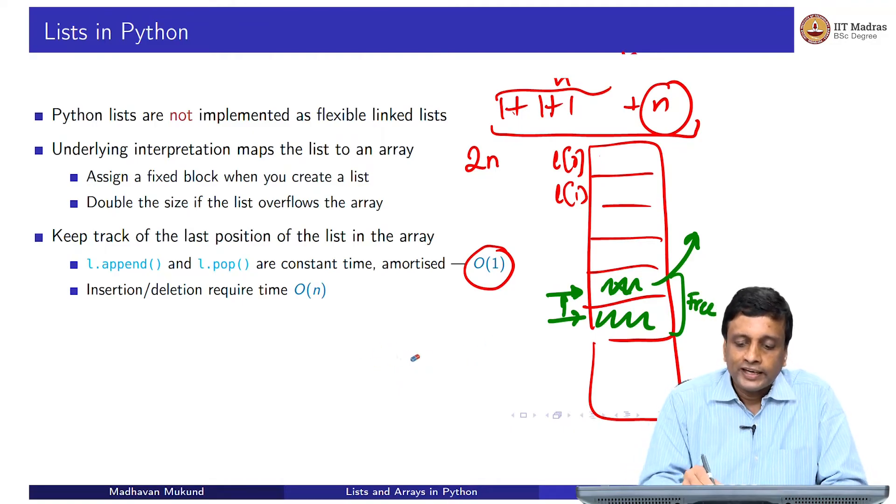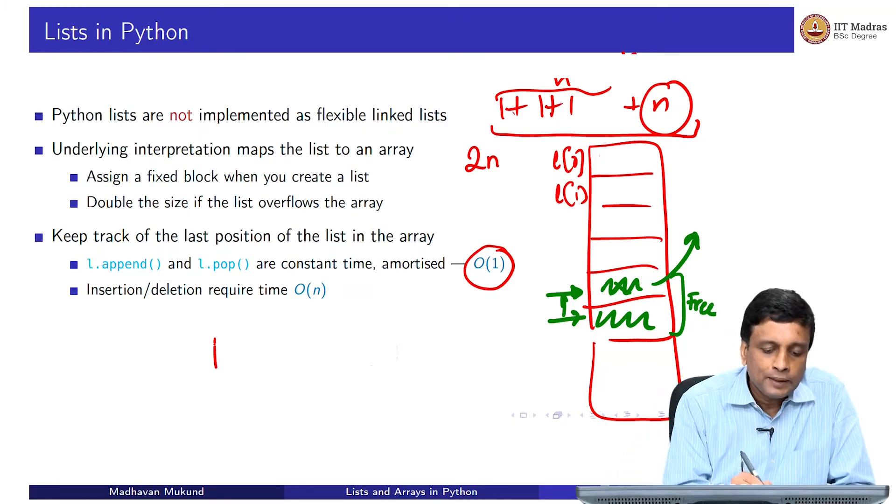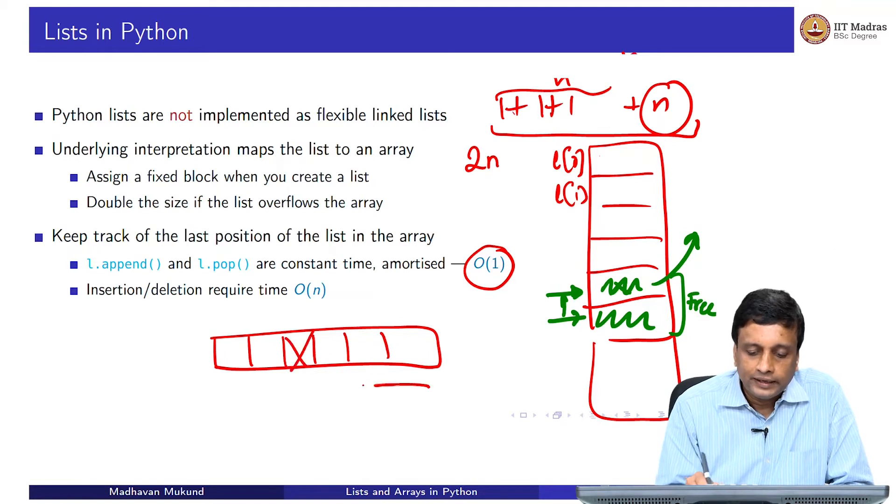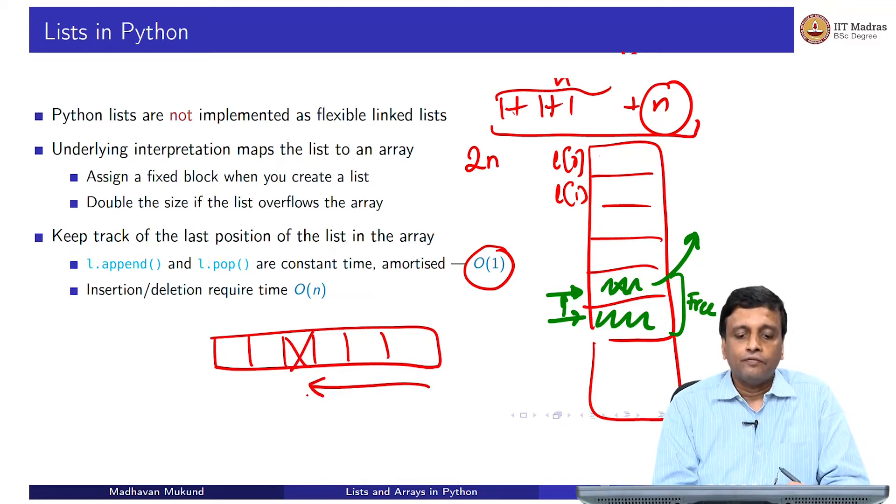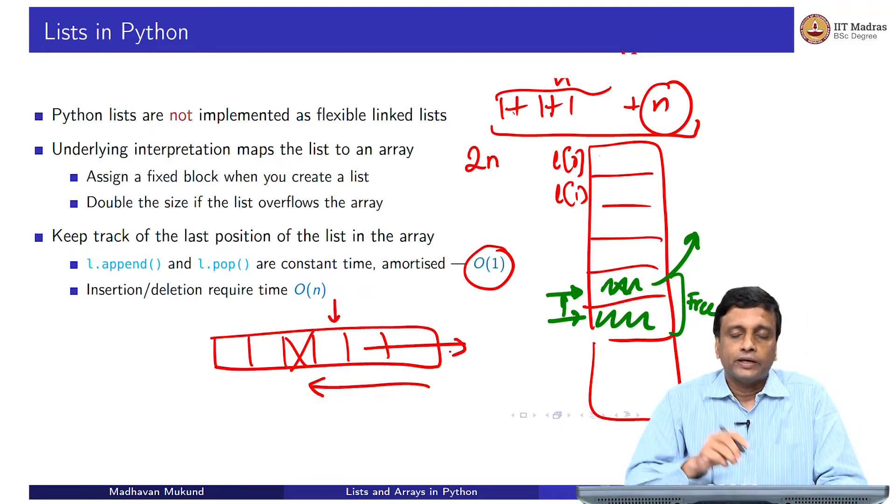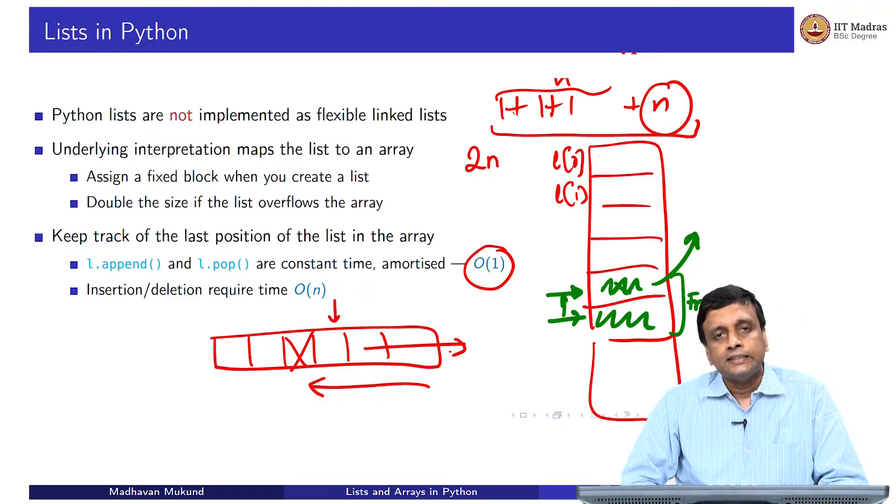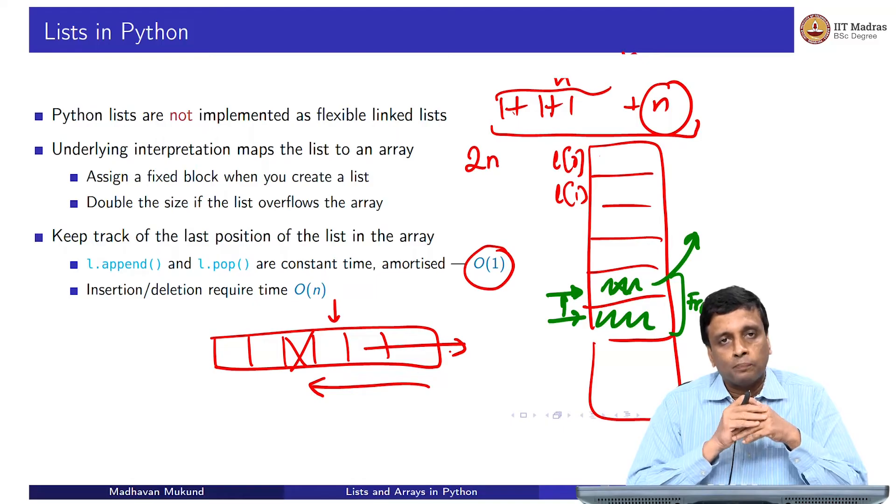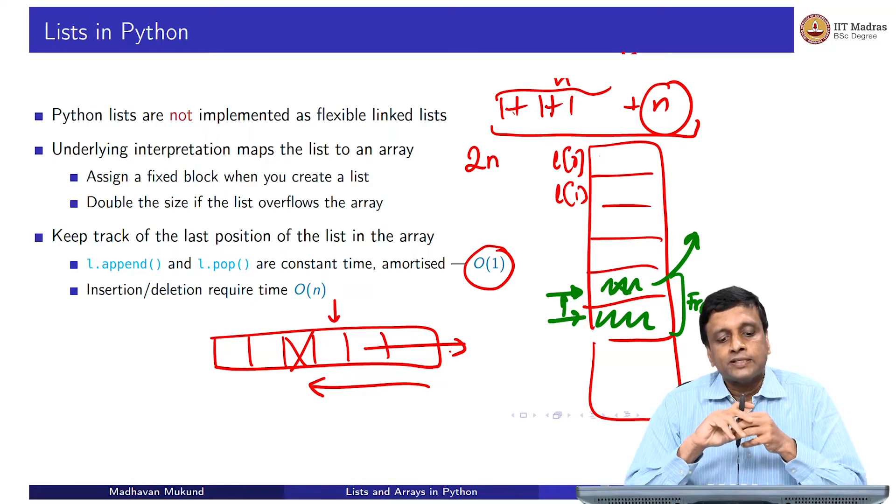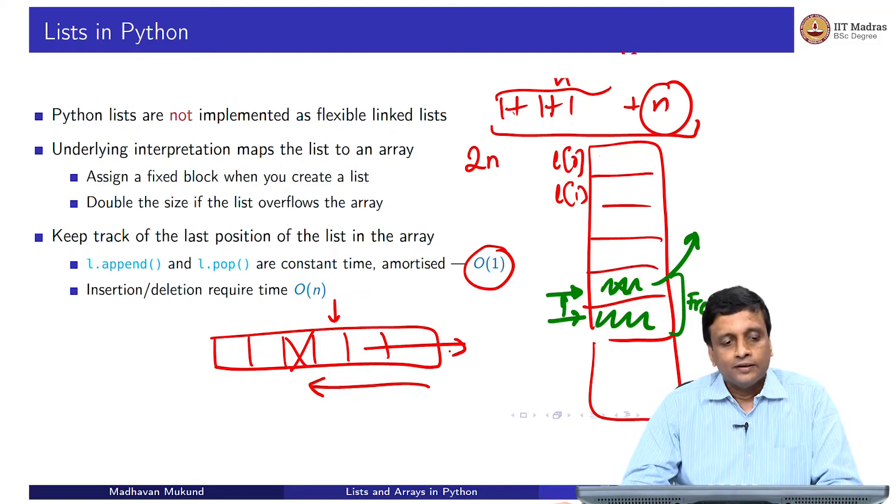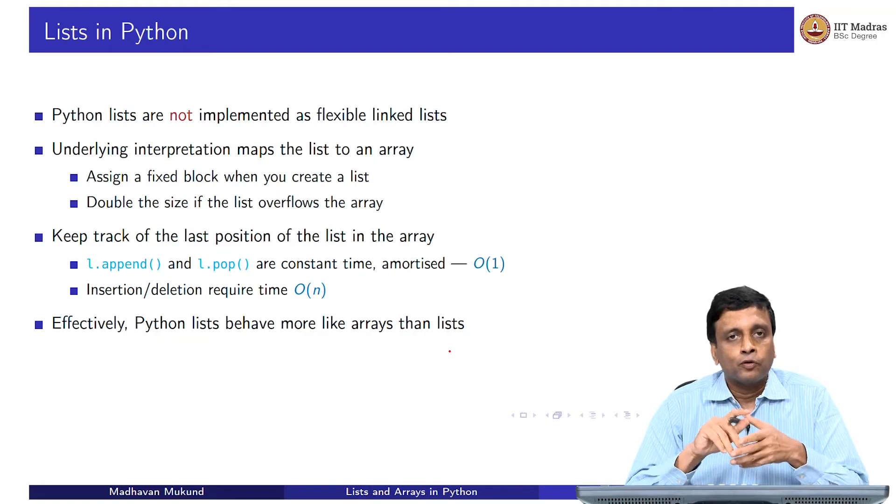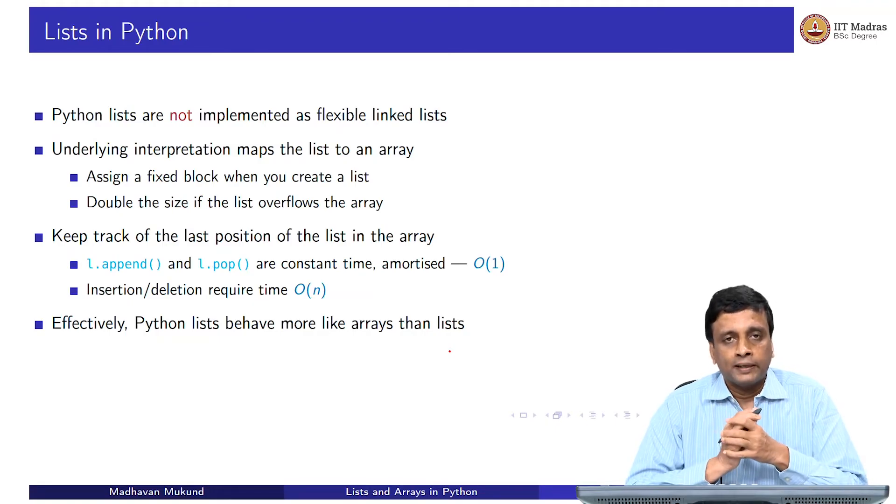On the other hand, as you would expect, because this is an array and exactly the same problem as happens in an array. When I have a sequence and I want to delete this element, I have to shrink everything from the right to the left. Or if I want to insert an element here, I have to push everything to the right. Insertion and deletion in the middle of an array will be expensive because I have to push everything one position to the right or pull everything back one position to the left. Insert and delete actually require order n.